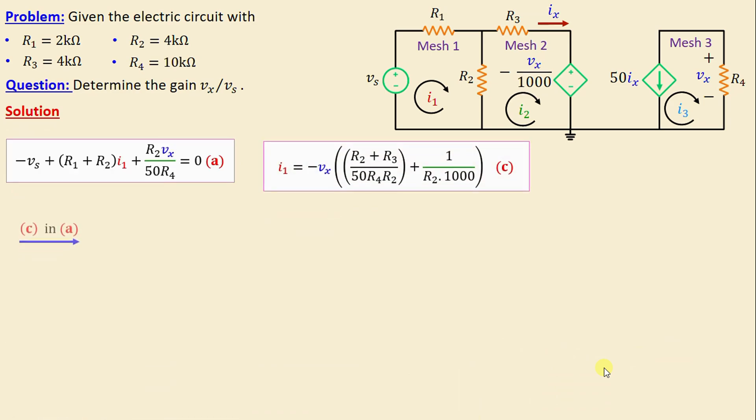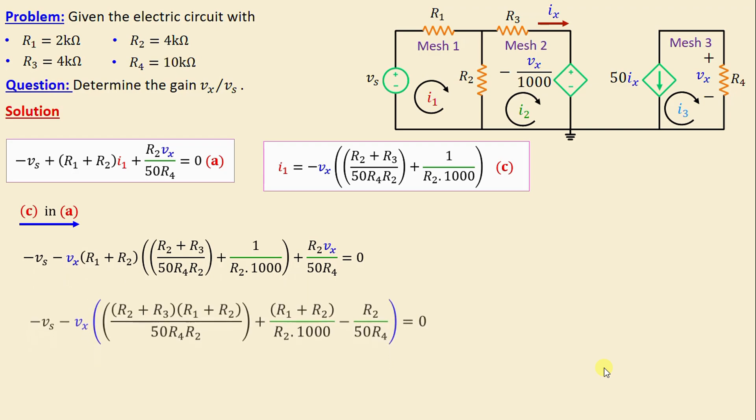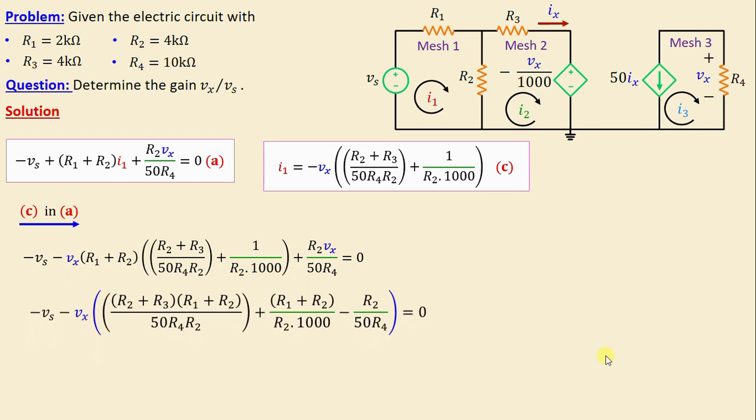Now, by substituting now C in A, we derive one equation in terms of Vs, Vx and the resistors. And if we continue simplifying this equation by combining the two terms containing or multiplied by Vx, we obtain finally the gain expression Vx over Vs.